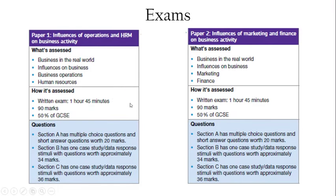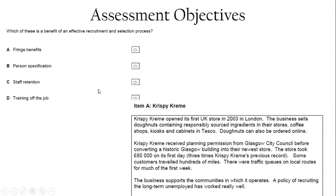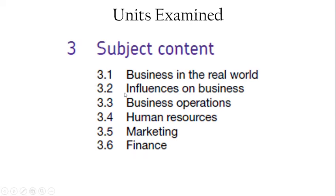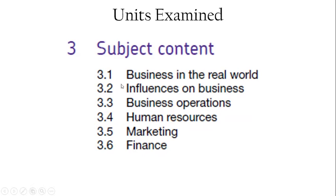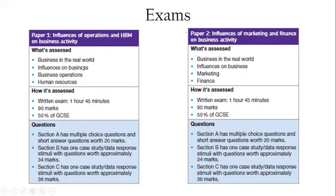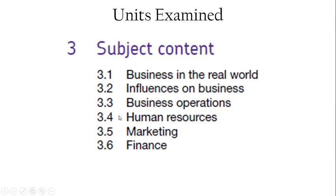It's also important to be aware of the exams you're going to be sitting. You are sitting two papers, each one worth 90 marks and an hour and 45 minutes each — so it translates into about a minute per mark. In the 'What's Assessed' column you can see the titles are related to the units: 3.1 and 3.2 — Business in the Real World and Influences on Business — are assessed in each paper, as they underpin the other units. Paper one covers Business Operations and Human Resources (3.3 and 3.4).